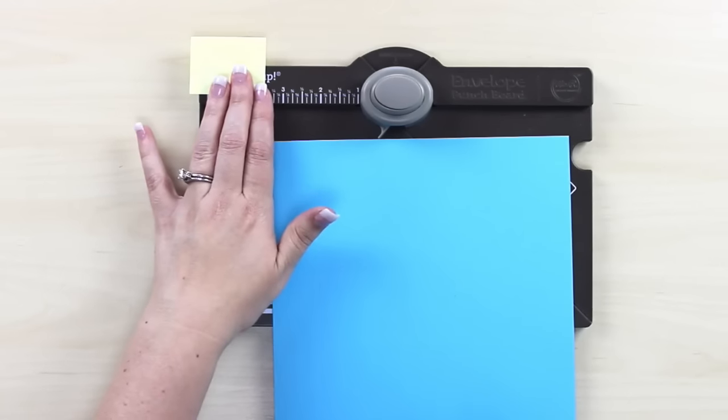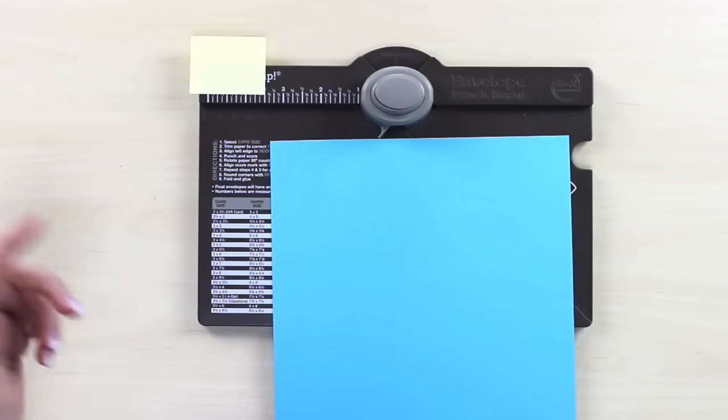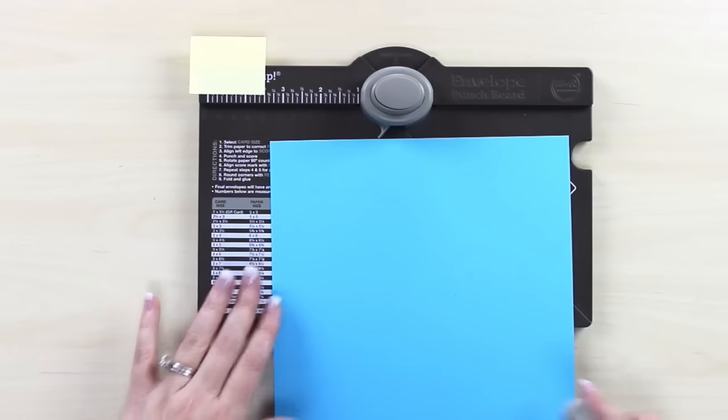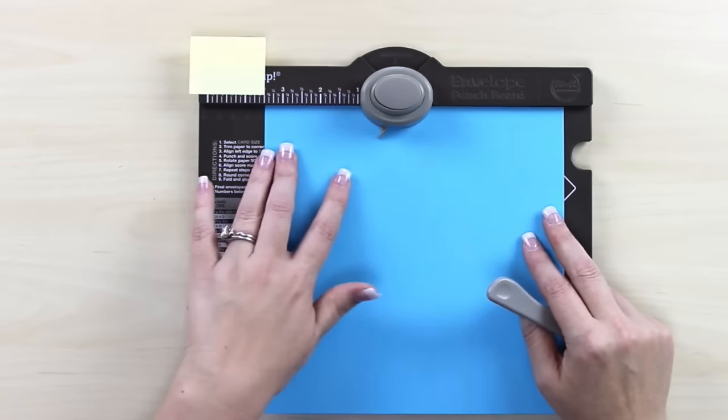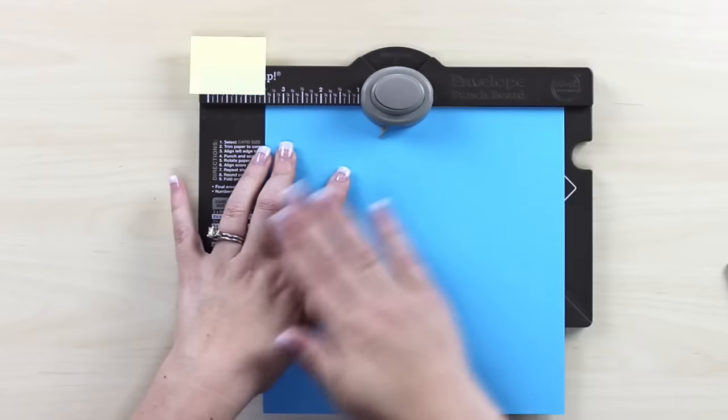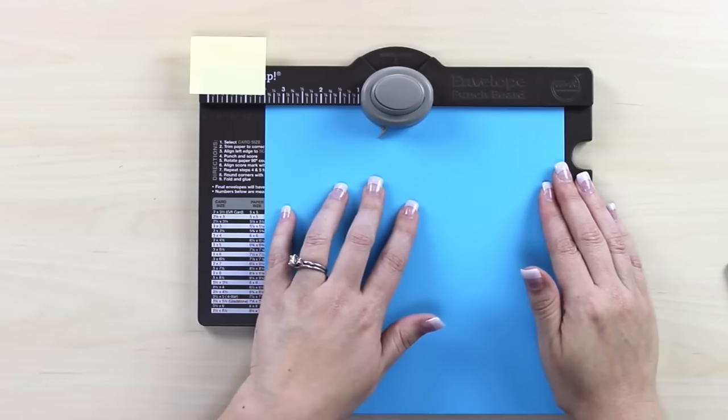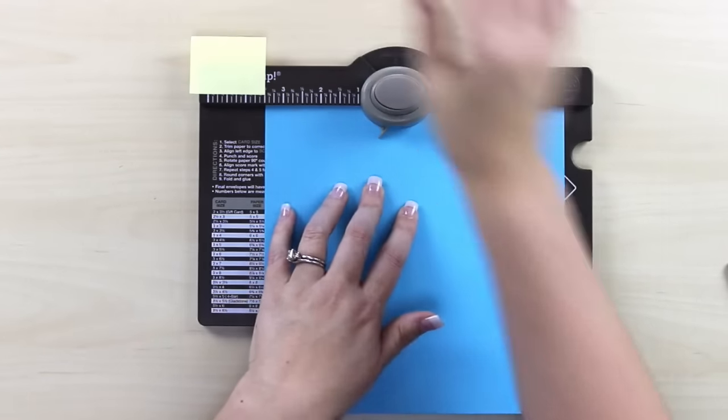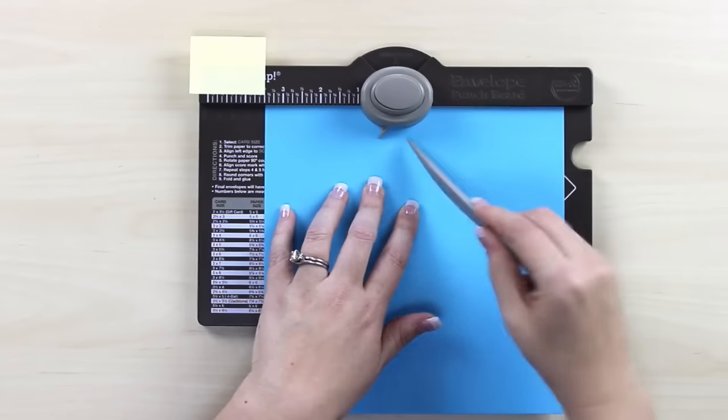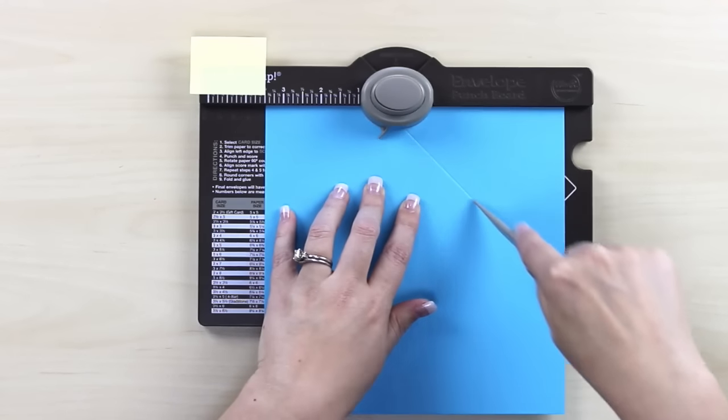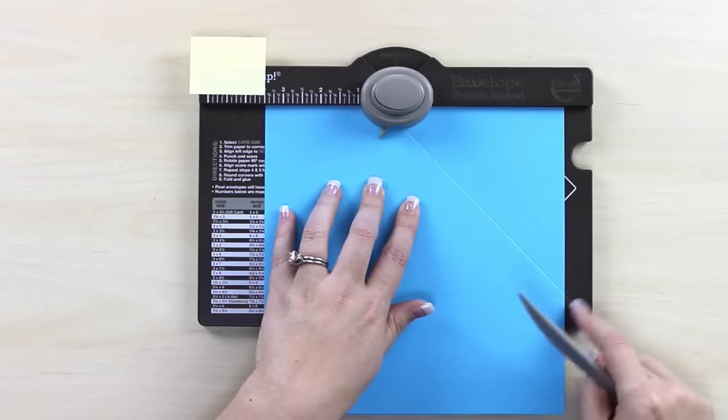So I normally have this post-it sitting right here so that I don't have to go back. Yes, sometimes I make these other measurements, but nine times out of ten, this is what I'm doing. So I'm going to start by lining up my card stock at that three and a half inch mark and I'm going to punch. Then I'm going to take the scoring tool and I'm just going to go right on this score line that's right here.